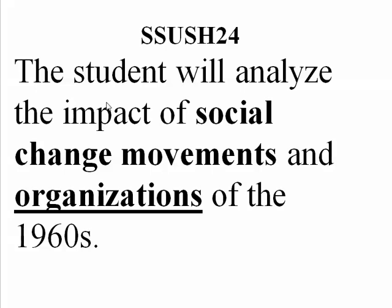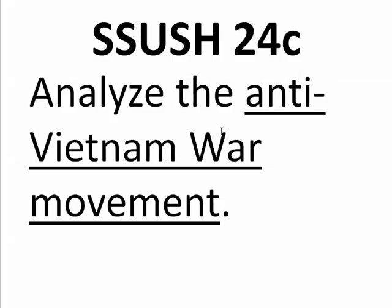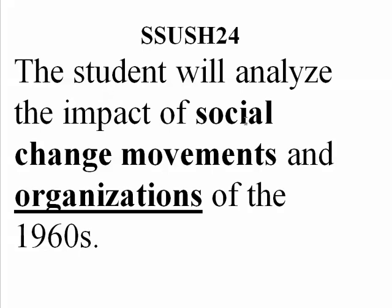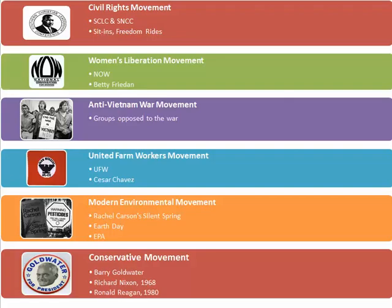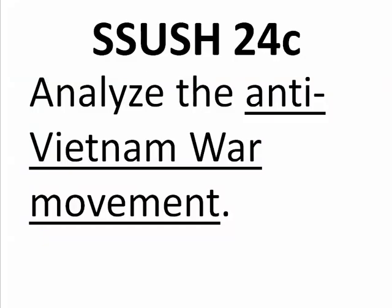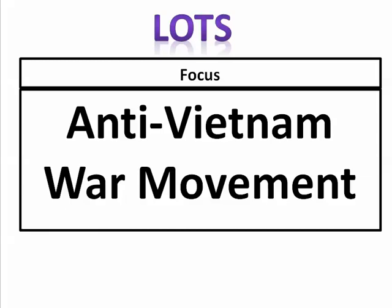We're going to do 24C - analyze the anti-Vietnam War movement, the movement to end the Vietnam War. It's going to be a short video. The student will analyze the impact of social change movements and organizations. We talked about these - the Civil Rights Movement, the Women's Liberation Movement already. Now we're on the anti-Vietnam War movement, and one of the organizations was SDS, Students for a Democratic Society.